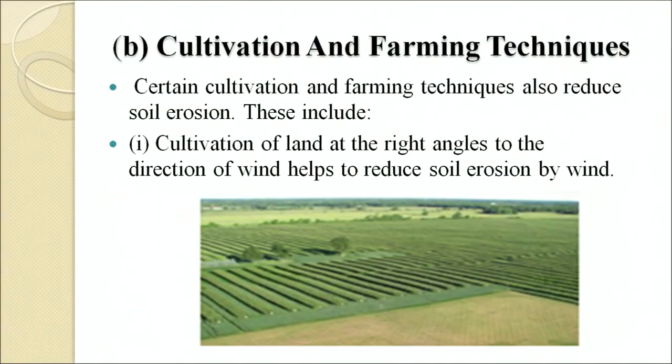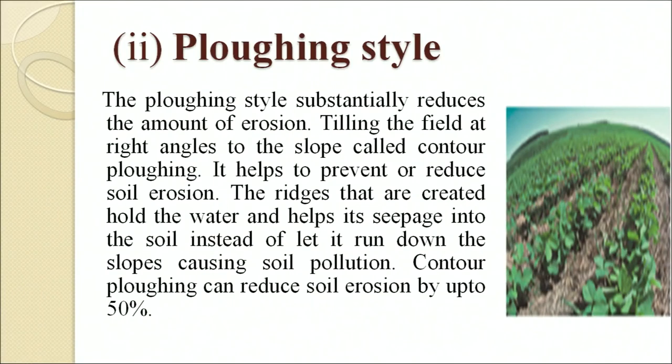Cultivation and farming techniques also reduce soil erosion. Cultivating land at the right angle to the direction of wind helps reduce soil erosion. Plowing style: plowing the field at right angles to the slope, called contour plowing, helps to prevent or reduce soil erosion. The ridges created hold the water and help its seepage into the soil instead of letting it run down the slopes. Contour plowing can reduce soil erosion by up to 50 percent.